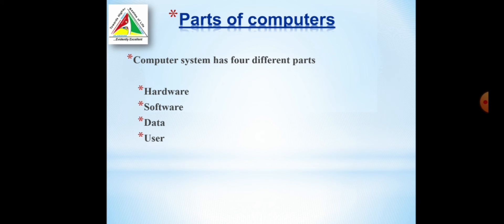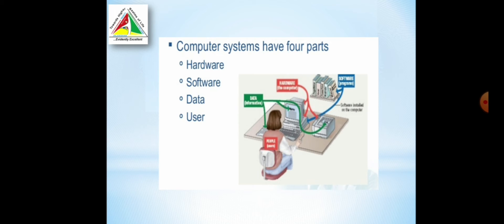Now, we will see the parts of computers. Basically, a computer system has four main parts: hardware, software, data and user. This is the picture depicting these four parts. Here, one person is sitting, that is the user. User inputs the data to the computer. The software is inside the computer that performs the task. Then, the hardware is the machine part which helps to process the data.